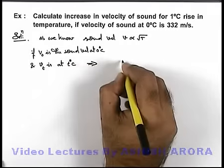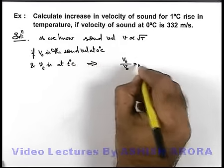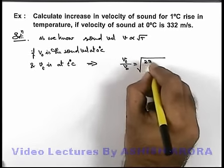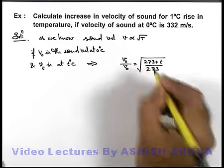This implies we can write v t by v not is equal to root of 273 plus t divided by 273.